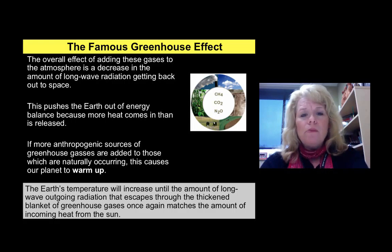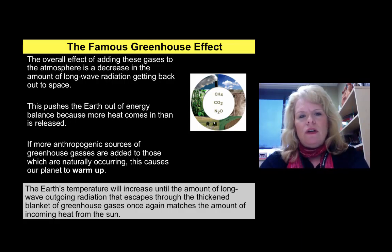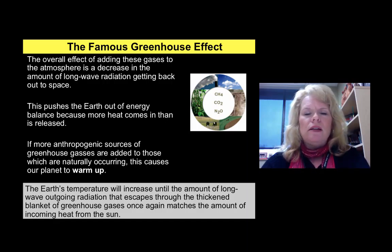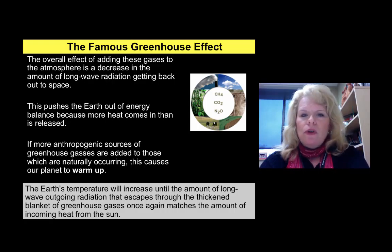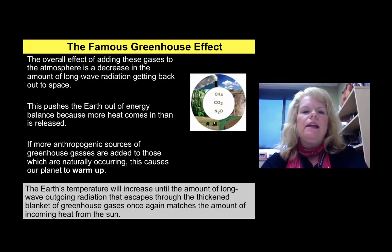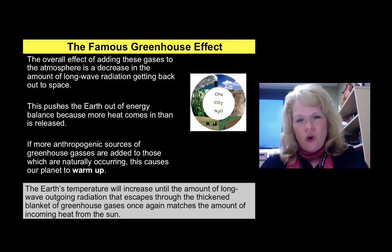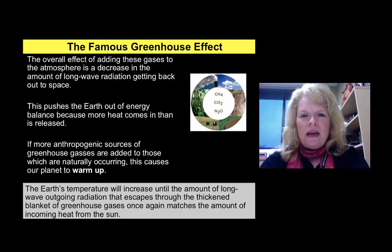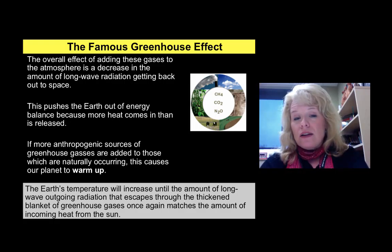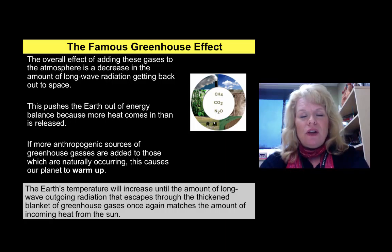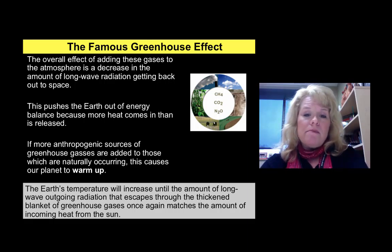This warming process will increase until the outgoing long-wave radiation escapes through the thickened blanket of greenhouse gases and matches what's coming in — essentially the Earth compensates. For example, like when you get a fever and try to bring your body heat down, the Earth absorbs excess energy into the ocean. The ocean also takes excess carbon out of the atmosphere and stores it in rock — specifically limestone. That's concerning because if the ocean changes temperature, that limestone can degrade and dissolve, releasing carbon back into the atmosphere, which could cause a runaway greenhouse effect very quickly.